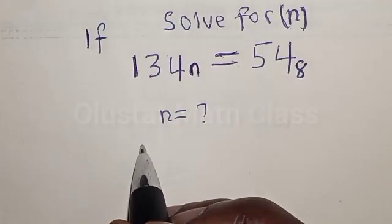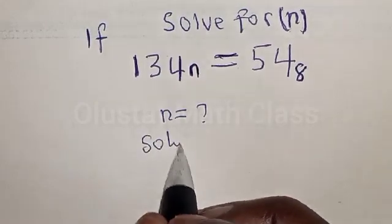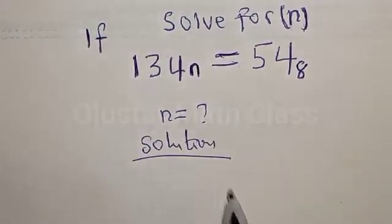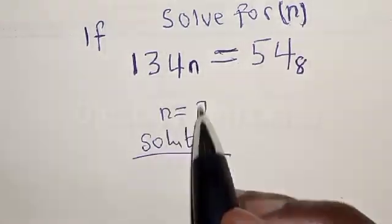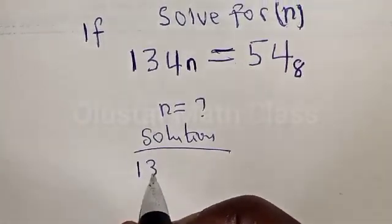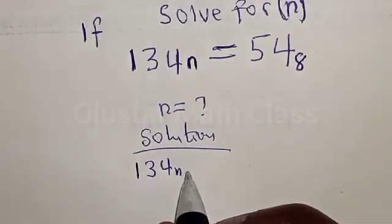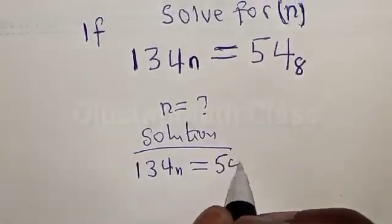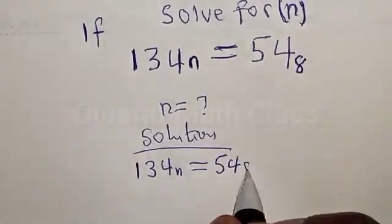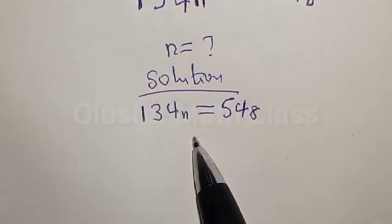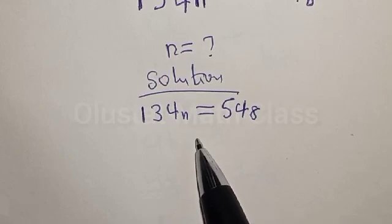Solution. If you have this type of equation — 134 base n is equal to 54 base 8 — what we need to do first is to convert the equation on both sides to base 10.